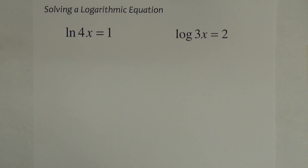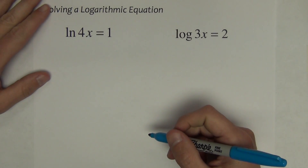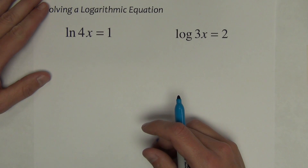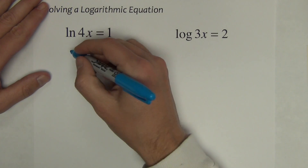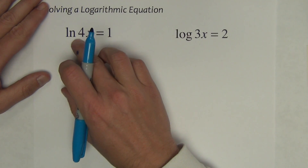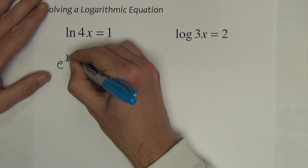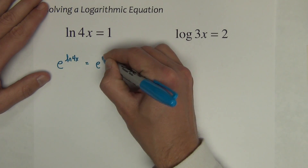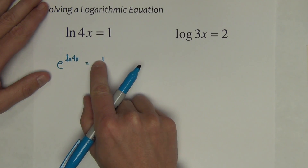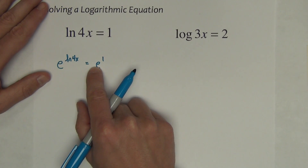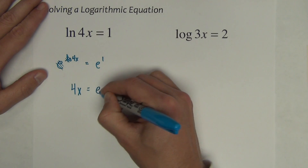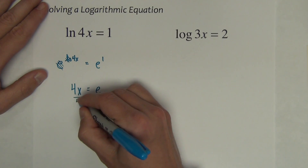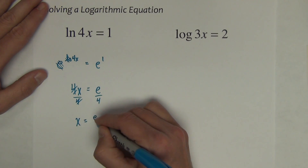Now I want to show how to solve equations that already involve logarithms — logarithmic equations. The process is called exponentiating the equation: rewriting it in exponential form. For natural log of 4x equals 1, the base is e, so I raise e to both sides: e raised to the natural log 4x equals e raised to the first power. Natural log and e cancel, leaving 4x equals e. Dividing by 4 gives x equals e over 4, the exact answer. The approximate answer is 0.6796.